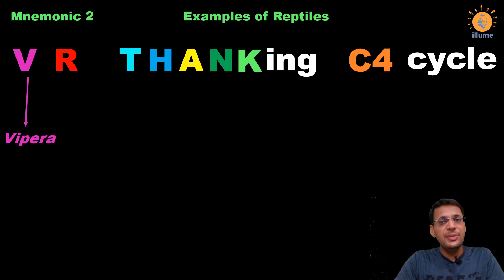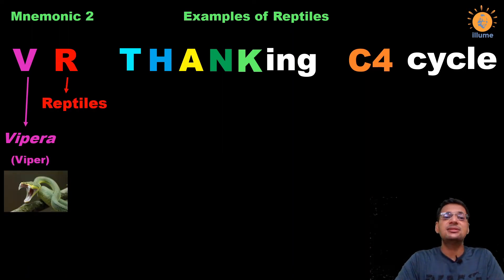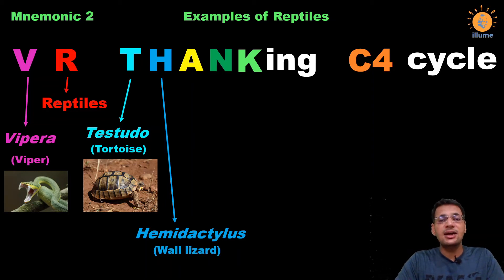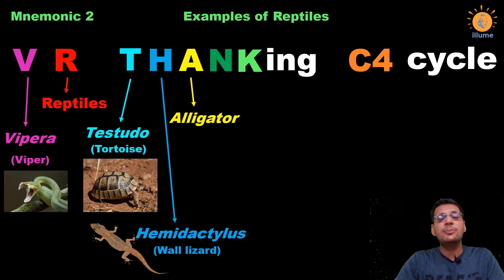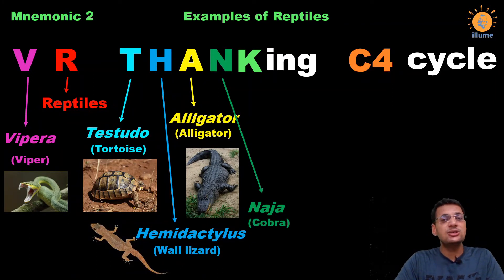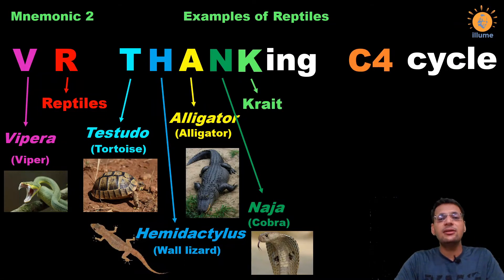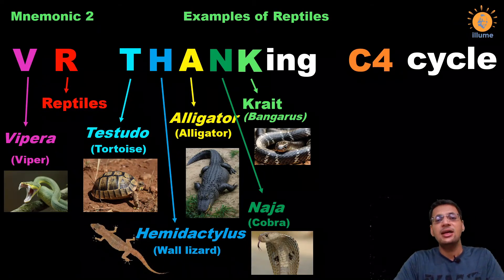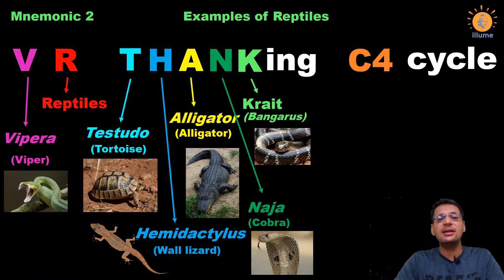In the mnemonic 'We Are Thanking C4 Cycle': W stands for Vipera, the viper snake. R reminds us this mnemonic is for Reptiles. T is for Testudo, the tortoise. H is for Hemidactylus, the wall lizard — the lizard you frequently see on walls at home. A is for alligator. N is for Naja, the cobra snake, which is very poisonous. K is for Krait, or Bungarus, another snake. Vipera, Naja, and Krait are all poisonous snakes as mentioned in NCERT.